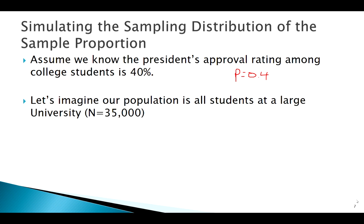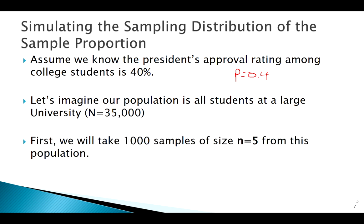And let's say we're at a large university like ours, 35,000 students. So we're going to repeatedly sample, take 1,000 samples of size 5, calculate the sample proportion of the approval rating for each of those samples, and then graph them.